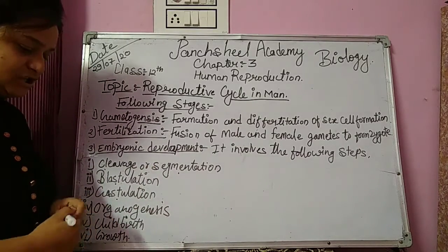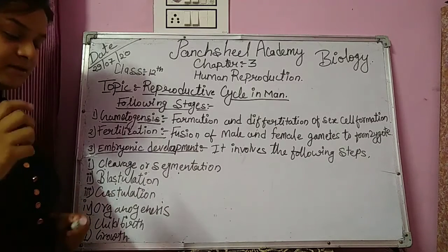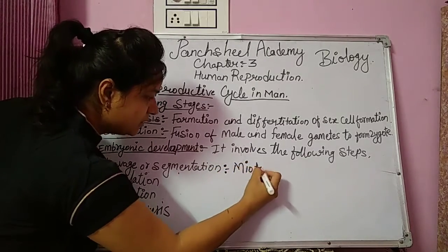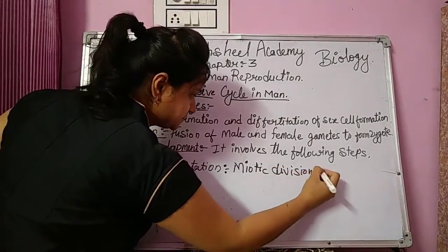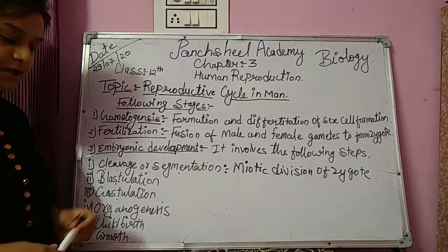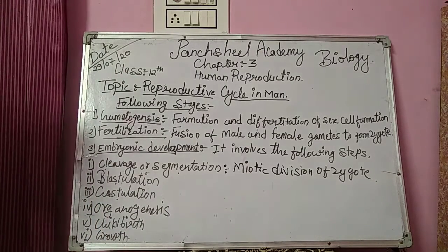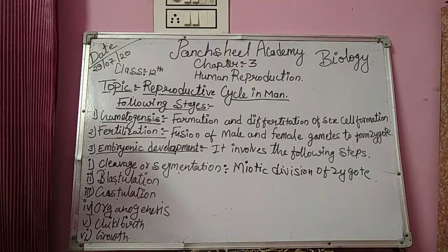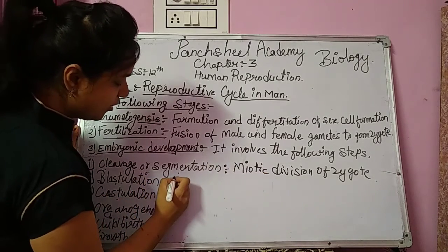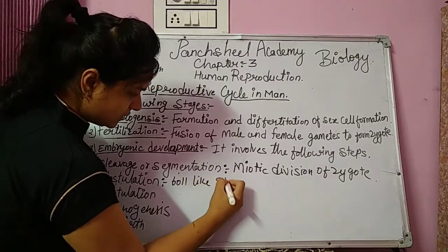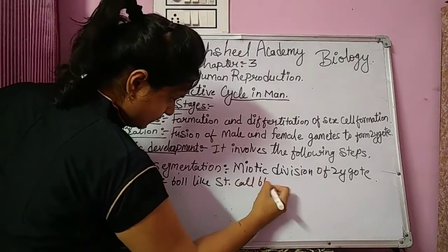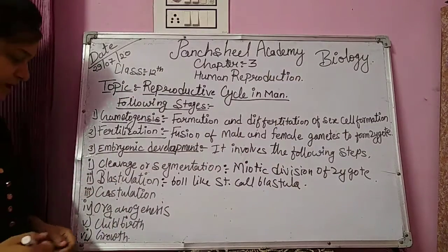If we talk about cleavage or segmentation, it is the mitotic division of the zygote. After segmentation and cleavage, the zygote undergoes a series of mitotic divisions to form a ball-like structure called the blastula. The formation of the blastula is called blastulation.